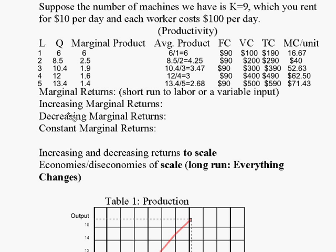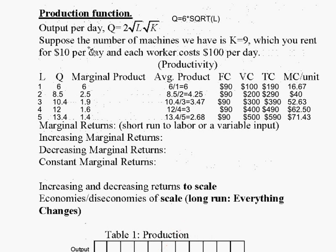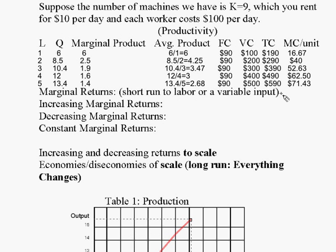Let's double the size of the entire operation by doubling the number of workers to 10 and doubling the number of machines from the 9 that we had in the last example to 18. What's going to happen here?